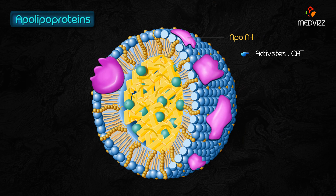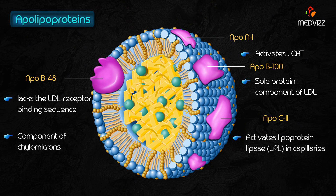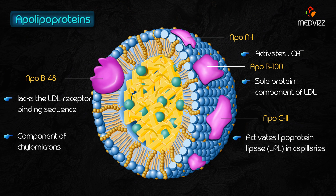So, what are apolipoproteins? Apolipoproteins are the proteins that bind to lipids and they have various functions. ApoA1 activates LCAT, which is lecithin cholesterol acyl transferase. ApoB100 is a sole protein component of LDL, and ApoB48 lacks the LDL receptor binding sequence that ApoB100 has — it is a component of chylomicrons. ApoC2 activates lipoprotein lipase in capillaries, and ApoE mediates the chylomicron and IDL uptake in the liver.